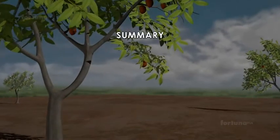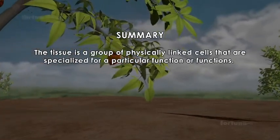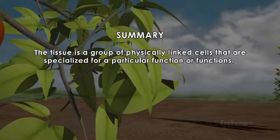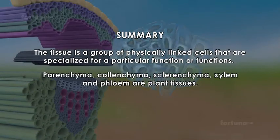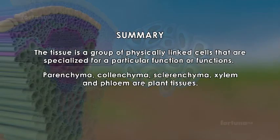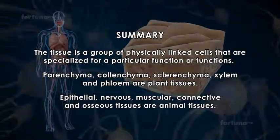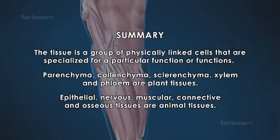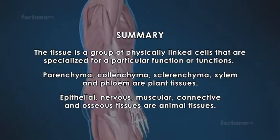Summary: A tissue is a group of physically linked cells that are specialized for a particular function or functions. Parenchyma, colenchyma, sclerenchyma, xylem and phloem are plant tissues. Epithelial, nervous, muscular, connective and osseous tissues are animal tissues.